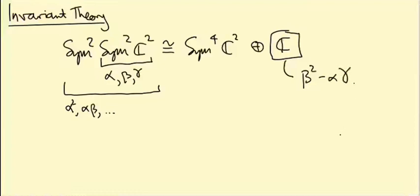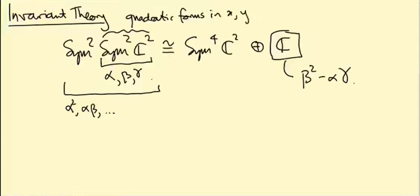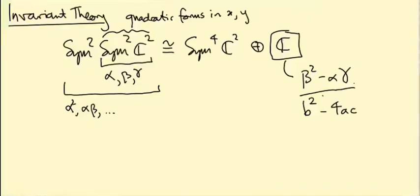The thing that's a bit weird is: Sym2(C²) we've said is like quadratic polynomials or quadratic forms in x and y — x and y are a basis of C². The quadratic forms are things like ax² plus bxy plus cy². Sym2 of that is like quadratic expressions in the coefficients of those quadratic forms. We know there's a special expression in those coefficients that tells us when the quadratic form has a repeated root — it's b² minus 4ac, the thing you put inside the square root when solving a quadratic equation. That's somehow what we expect to see here.